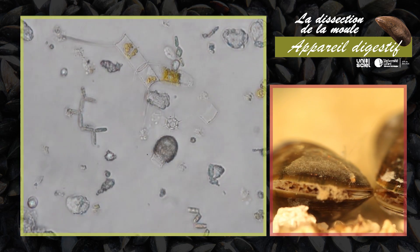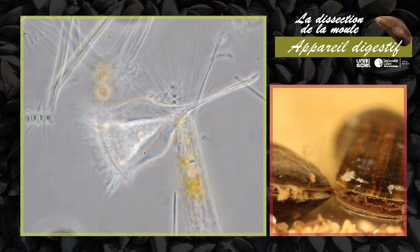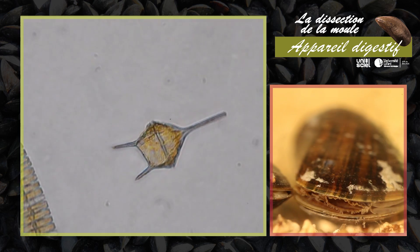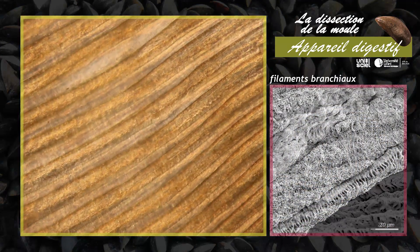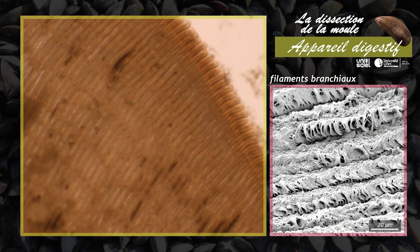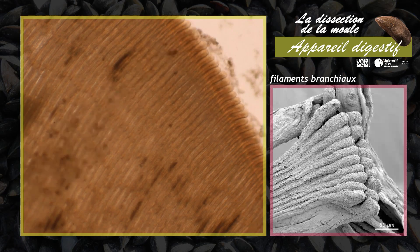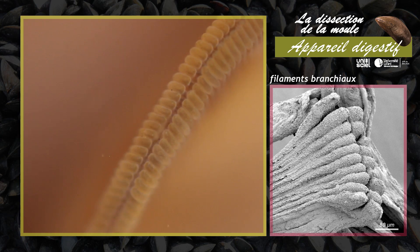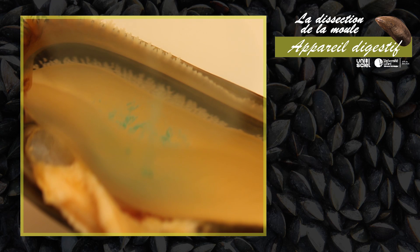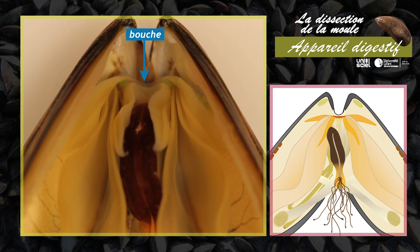La moule est un organisme filtreur-microphage. Elle se nourrit du plancton en suspension dans l'eau. Le plancton circule dans la cavité paléale grâce au battement des cils présents sur les branchies. Les particules alimentaires piégées par un voile muqueux sont acheminées rapidement au sommet des branchies puis canalisées vers la bouche pour y être ingérées. Ce phénomène peut être observé en déposant une goutte de colorant à proximité d'une branchie : le pigment est rapidement piégé dans du mucus et acheminé vers la bouche par les battements ciliaires. La bouche est entourée par quatre palpes labiaux qui contribuent à l'ingestion de la nourriture.